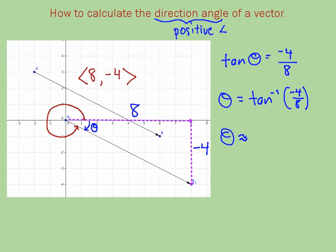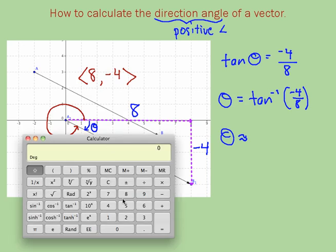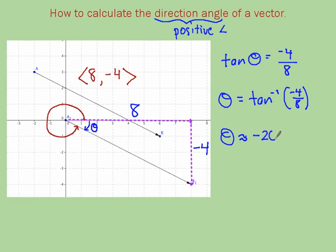And let's see what we get here. I'm going to take negative 4 and divide it by 8, and then I'm going to find the inverse tangent, and I get negative 26.565.